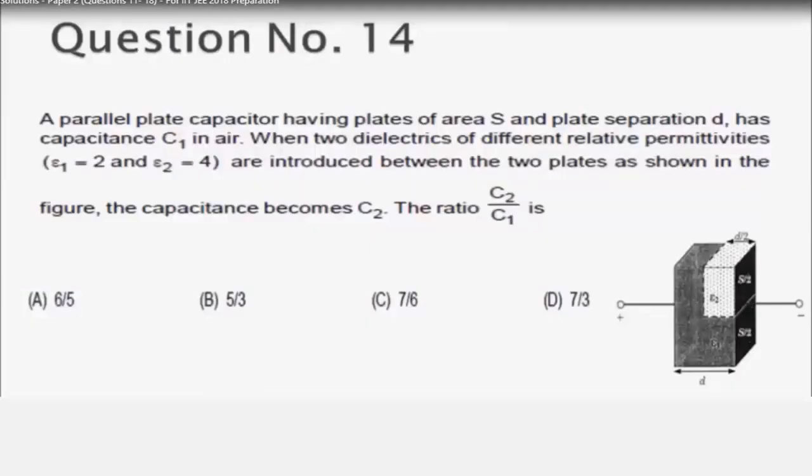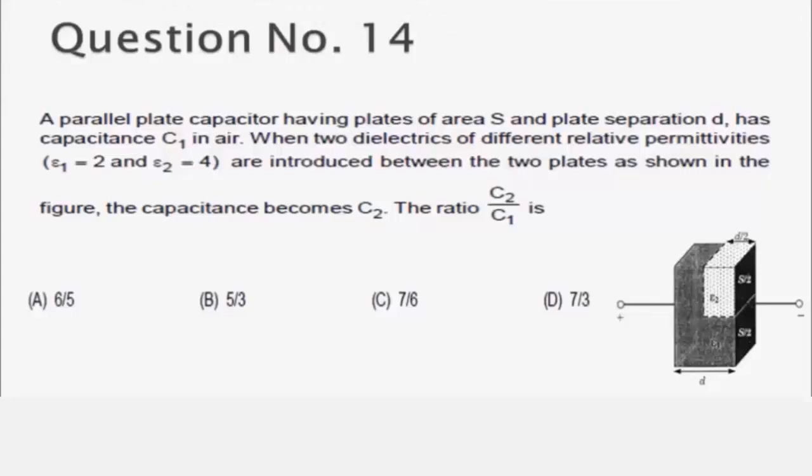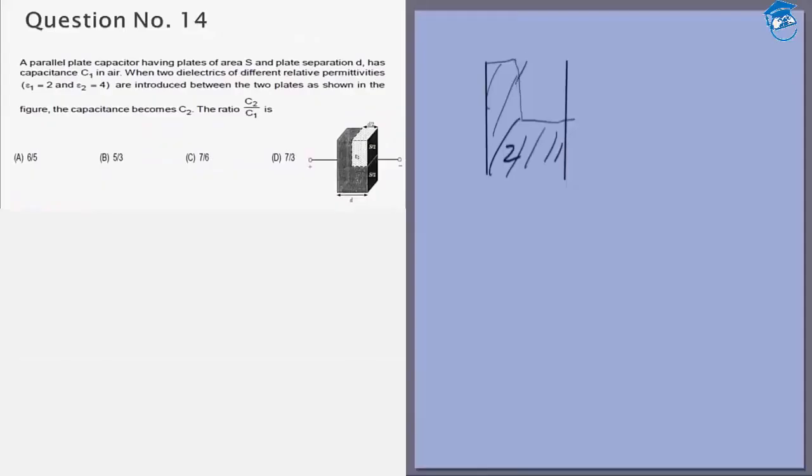In the next question we are given a parallel plate capacitor and in that capacitor we have filled different regions with different materials. All this region has been filled with material of permittivity 2 and this is filled with region of permittivity 4. So we want to find out the new capacitance of the system.